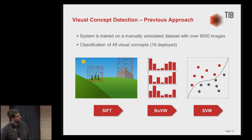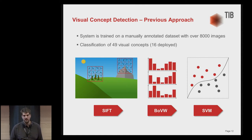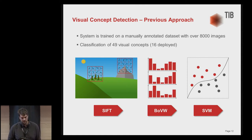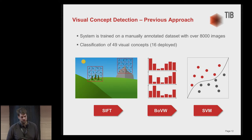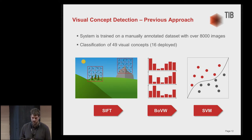This whole system was trained with more than 8,000 manually annotated images. The system could distinguish between 49 concepts, but only 16 of them were deployed.